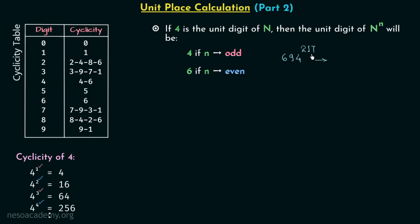217 is definitely odd, and therefore 694 raised to power 217 will have four at its unit place. Now if we have 694 raised to power 218, then in this case the digit at unit place will be equal to six, because n which is 218 is even, so we will have six at the unit place.